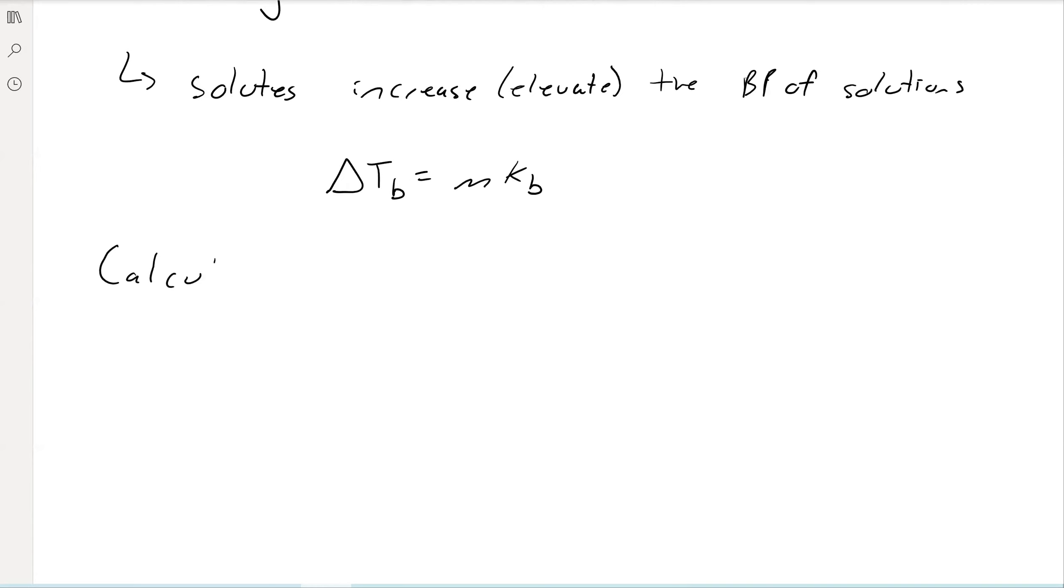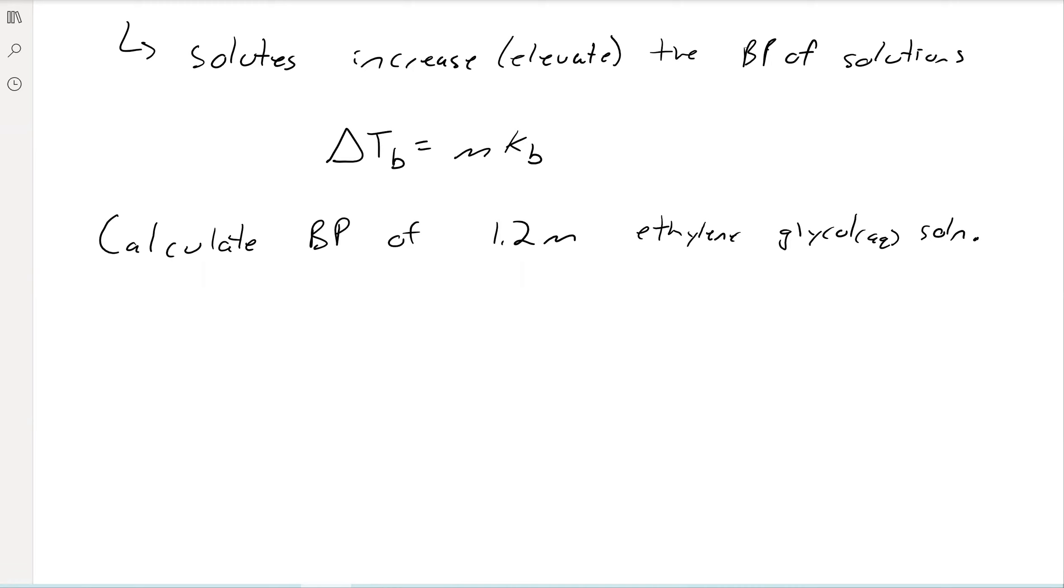So our question here will be calculate the boiling point of a 1.2 molal ethylene glycol solution. And it's aqueous, right? So that means that our solvent is water. So we're going to copy down the equation, delta Tb equals molal kb. This kb, you'd have to be given this value. It totally depends on which solvent you're talking about. The kb for water is equal to 0.512 degrees Celsius kilogram over mole.